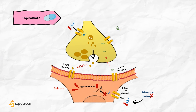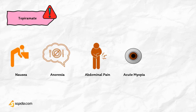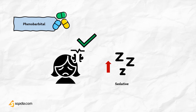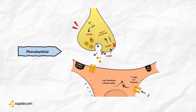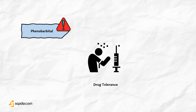Topiramate blocks sodium channels in cultured neurons. It also enhances the effects of GABA and blocks AMPA receptors. Adverse effects include nausea, abdominal pain, and anorexia. Topiramate has been associated with acute myopia and secondary closed-angle glaucoma. Phenobarbital is effective in tonic-clonic seizures and partial seizures, but is ineffective in absence seizures and is much more sedative. It enhances inhibitory neurotransmission in the CNS by enhancing activation of GABA-A receptors, facilitating GABA-mediated opening of chloride ion channels. Tolerance occurs with prolonged use and sudden withdrawal may precipitate status epilepticus.